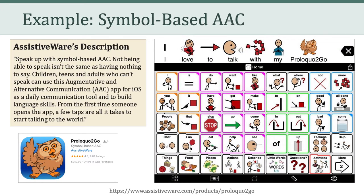AssistiveWare creates another product that is a symbol-based AAC, for people who don't necessarily have language skills yet. This particular app is called Proloquo To Go, and it's symbol-based, meaning users don't have to be able to read and write. They can use the pictures on the interface in order to create sentences and to communicate with others. If you look closely at the screenshot, the squares or cards in orange are pronouns such as I or you, the pink cards are verbs such as do or want, and the ones in green are prepositions such as to, in, or out. Using these cards, individuals can type out sentences and the application will then synthesize those sentences into speech.